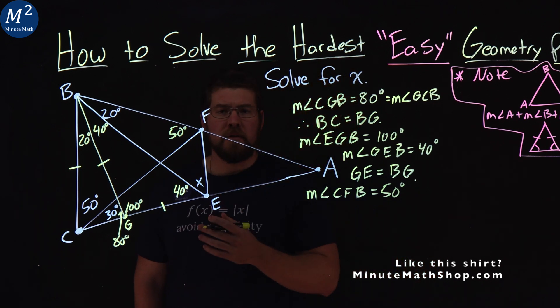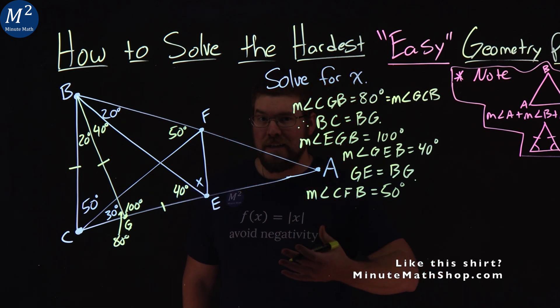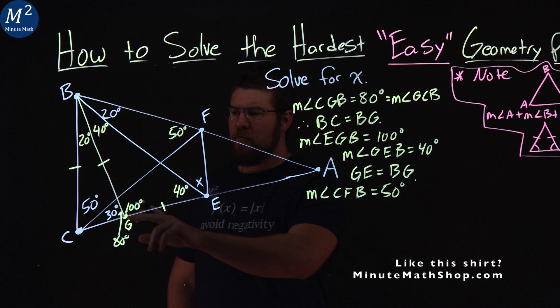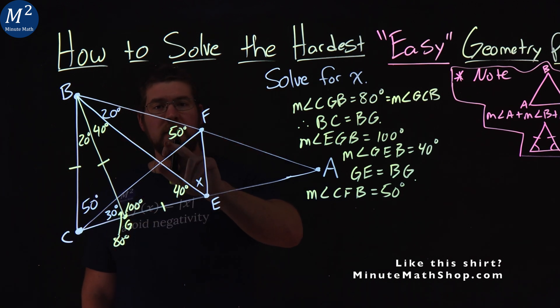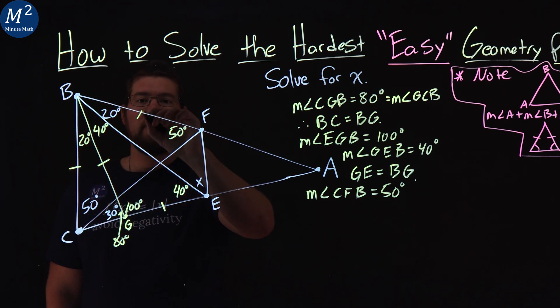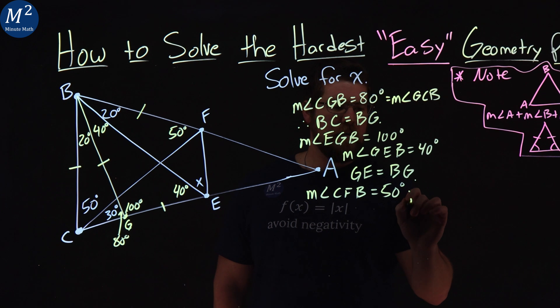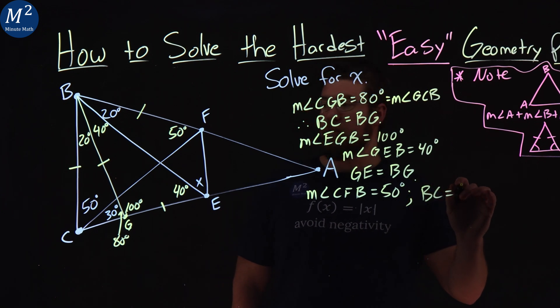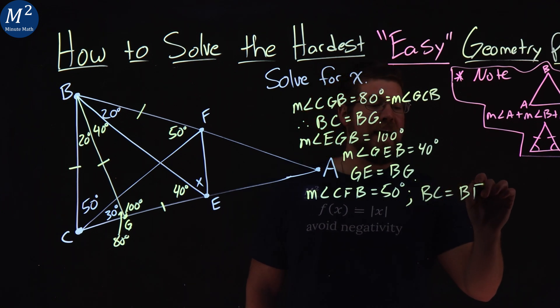And again, what do we notice? Well, we have another isosceles triangle. We have base angles of 50 and 50 degrees. So that means the side lengths there are congruent. And so BC is equal to BF here. And so I'll write that down here. BC is equal to BF.